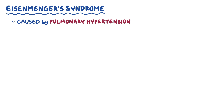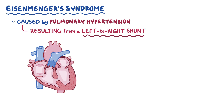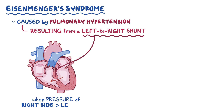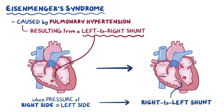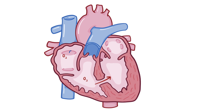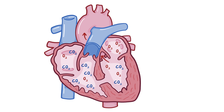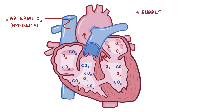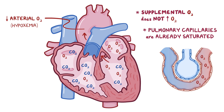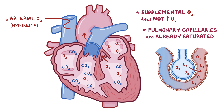Another example is Eisenmenger's syndrome, which is caused by pulmonary hypertension. Basically, what happens is that pulmonary hypertension, which can result from a left-to-right cardiac shunt, can get so severe that the pressures on the right side of the heart exceed the pressures on the left side, leading to a right-to-left shunt. Ultimately, in a right-to-left shunt, oxygen-poor and carbon dioxide-rich blood mixes with the oxygen-rich and carbon dioxide-poor blood that's already gone through the pulmonary circulation. The mixing causes oxygen levels to fall in the arterial blood, leading to hypoxemia, and supplemental oxygen does not bring levels back up because the blood going through the pulmonary capillaries is already saturated and can't pick up any more oxygen in the short time that the blood is going through the pulmonary capillaries.